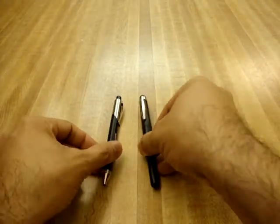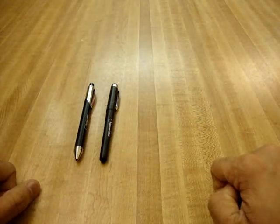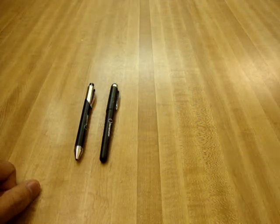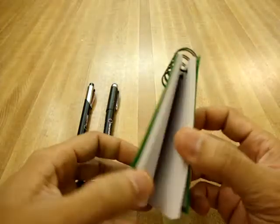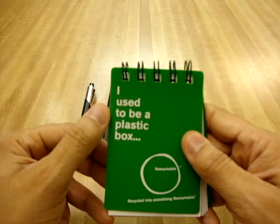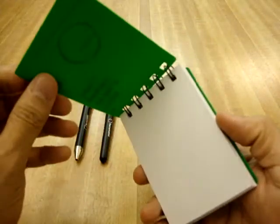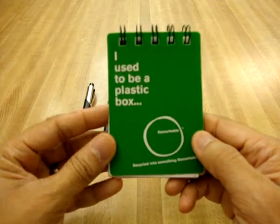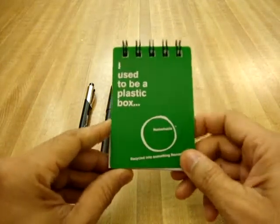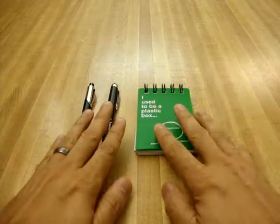So those two are pretty cool, something I picked up and these I actually picked up at the World of Coca-Cola exhibition in downtown Atlanta and I picked it up with this little notebook, it's always good to have writing paper and this one says I used to be a plastic box. So it's pretty cool that Coke and this Remarkable brand are getting together to pump these out because it's good for the environment but it's also cool looking when you carry it around.